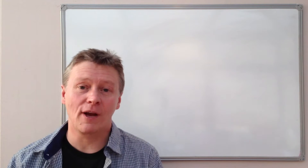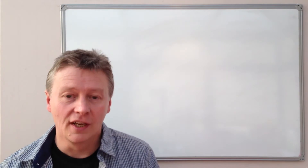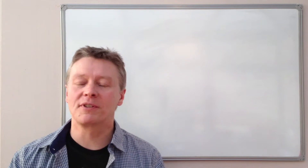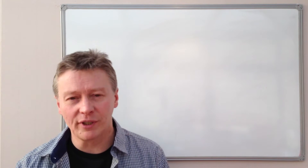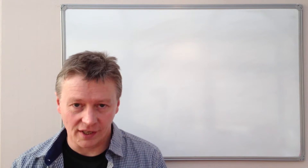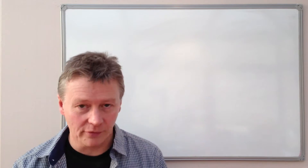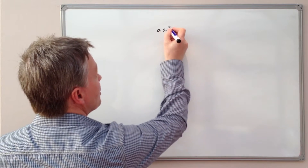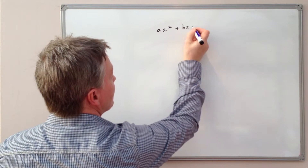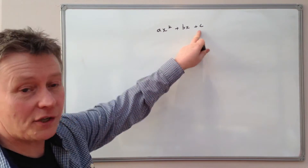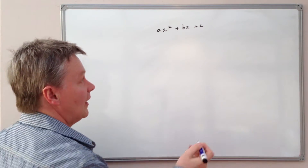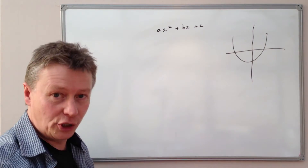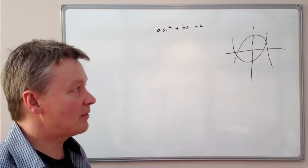Hi, so in this video we're going to be talking about factorization. This is the second video in a series on factorizing and is aimed particularly at students who are A or B grade GCSE, because it deals with a particular type of equation called a quadratic equation. So it has terms which are something like this. If you plotted this equation onto a graph it would look something like a U shape or an N shape.